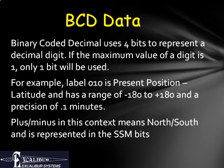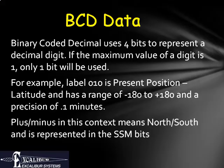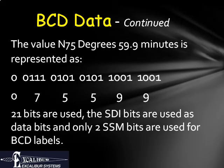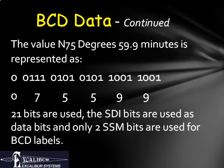BCD encoding uses sets of bits to display decimal data. Values from 0 through 9 can be coded using 4 bits. Values from 0 through 7 can be encoded in 3 bits. If the maximum value of latitude is 180 degrees, the top digit can only contain a 1 for values 100 degrees or higher, or a 0 for values below 100 degrees. Therefore, the top digit only requires a single bit to represent it. For example, the value of 75 degrees 59.9 minutes is represented as six groups of numbers: 0, 7, 5, 5, 9, and 9. The specification tells us that six digits are to be transmitted with a decimal point before the final digit.